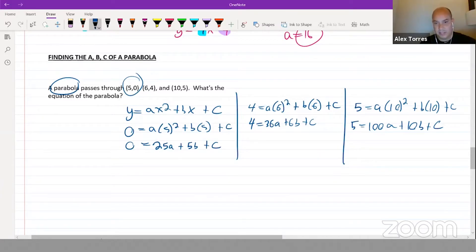Like for instance, I can multiply this equation by negative one: negative four equals minus 36a minus 6b minus c. And then bring that right over here and add straight down: one equals 64a plus 4b. And we've gotten rid of one variable.